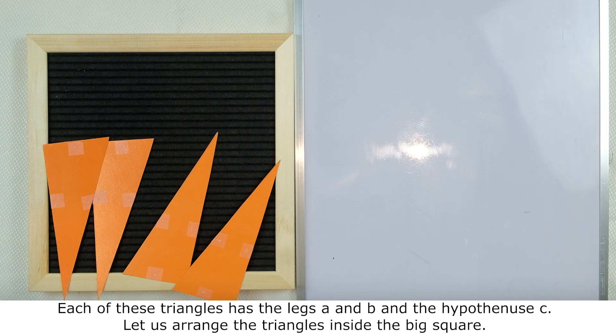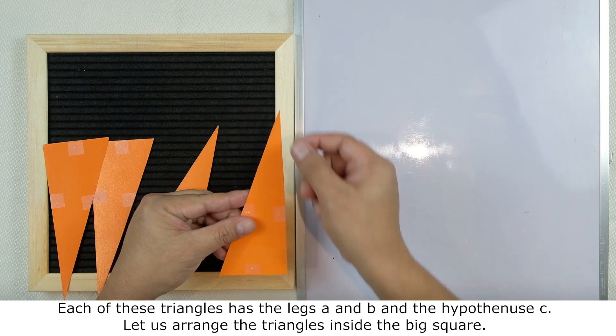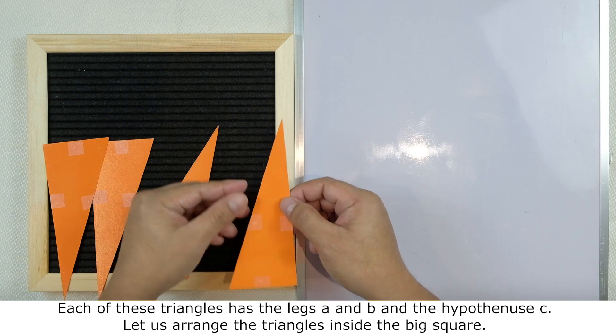Each of these triangles has the legs a and b and hypotenuse c. We have a, b, and the hypotenuse c.